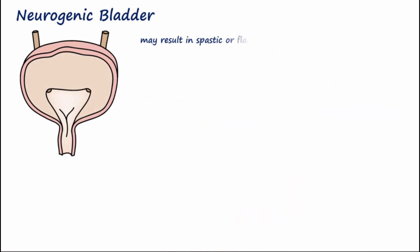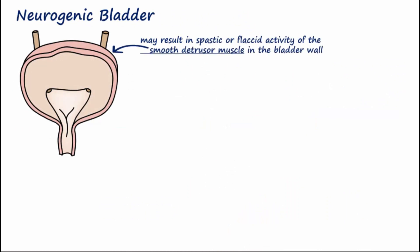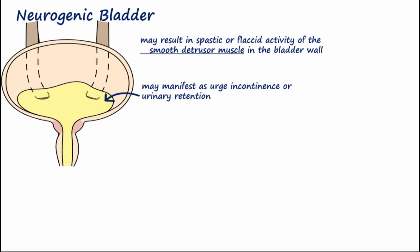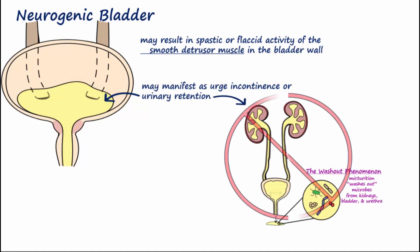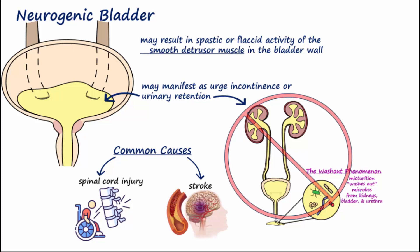Neurogenic bladder may result in spastic or flaccid activity of the smooth detrusor muscle in the bladder wall, which may manifest as urge incontinence or urinary retention respectively. In cases of urinary retention, the lack of washout increases risk of UTI. Common causes for neurogenic bladder include spinal cord injury and stroke.